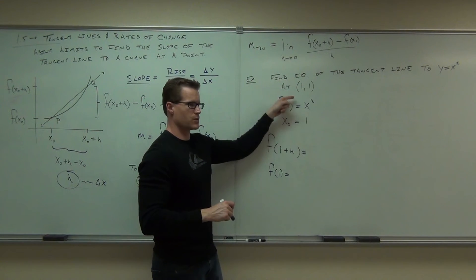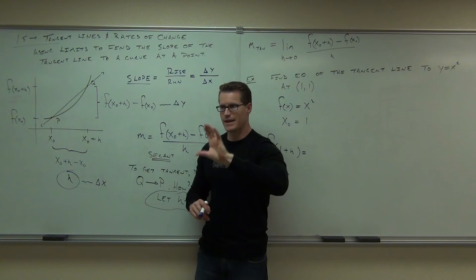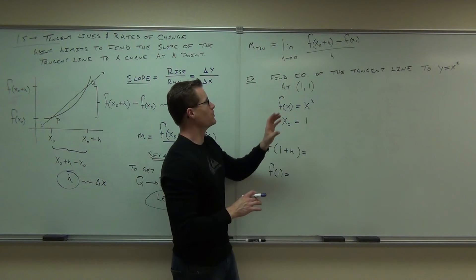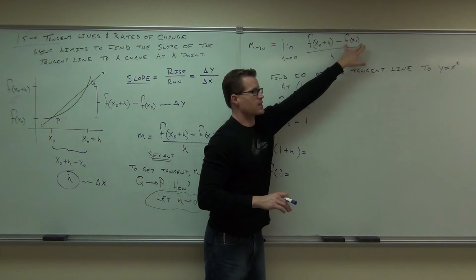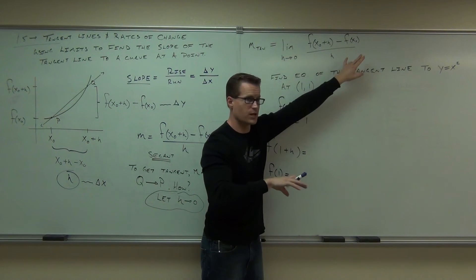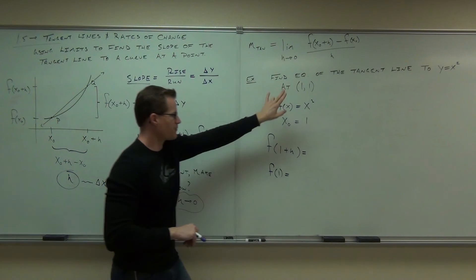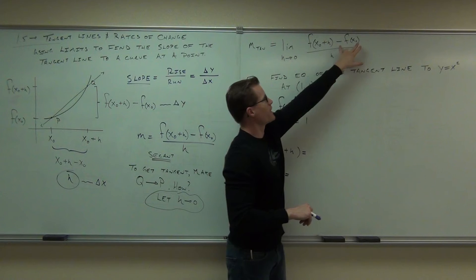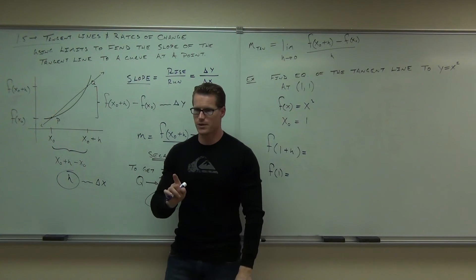This right here is your formula to find the slope of a tangent line. That's it. All you've got to be able to do, h is not going to change. You just need to find this thing and this thing accurately, plug it in, and find your limit. This is going to incorporate a lot of things we've done in this class already. So f of x sub 0 plus h, that is f of 1 plus h. f of x sub 0, that is f of 1 because x sub 0 is 1. You with me?